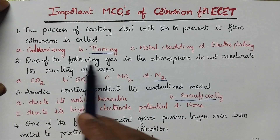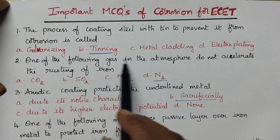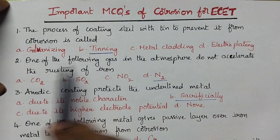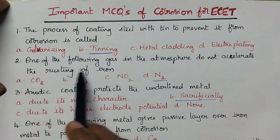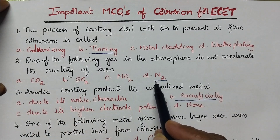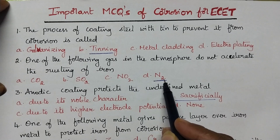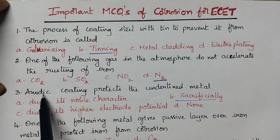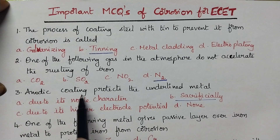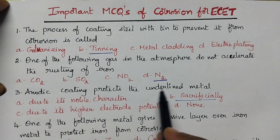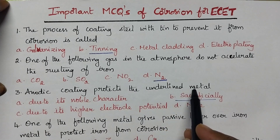One of the following gases in the atmosphere does not accelerate the rusting of iron. Nitrogen does not accelerate rusting of iron.